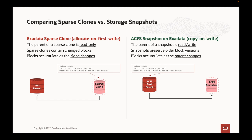ACFS is a copy-on-write technology, and it operates at the file system level as opposed to the ASM level. The ACFS snapshot enables parents to be read-write. They preserve the older blocks as they're being changed in the parent — in the source database — and are copied across into the snapshot as those changes happen at the parent, because we enable that read-write parent functionality. There are some important differences between the two technologies to understand.